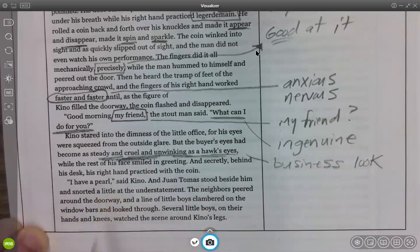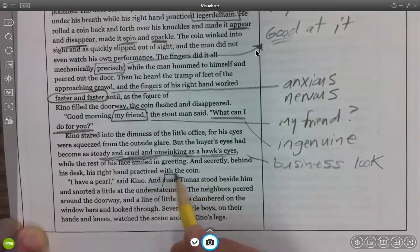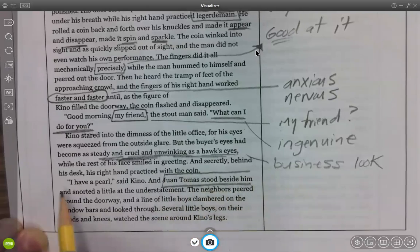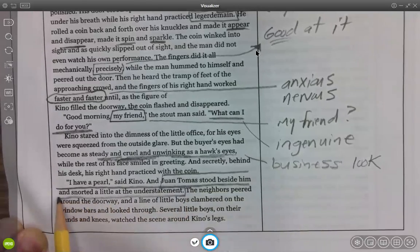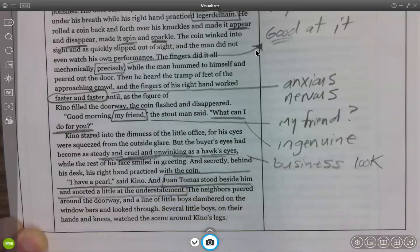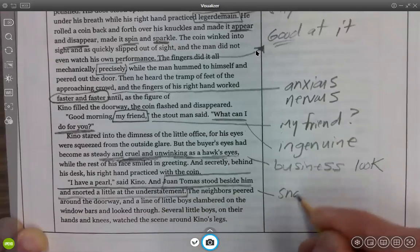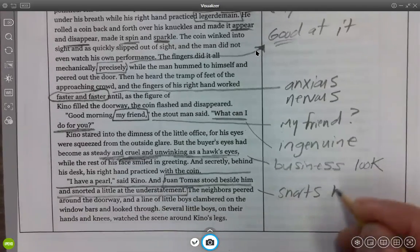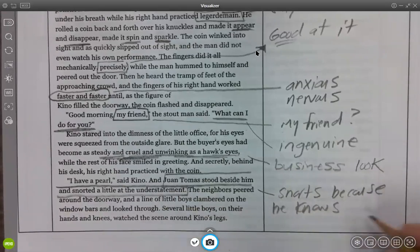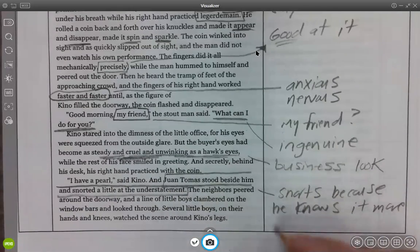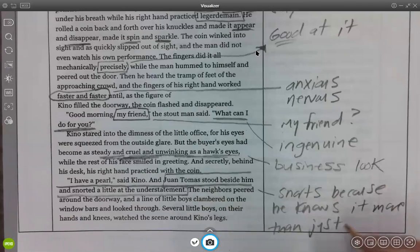I have a pearl, said Kino. And Juan Tomás stood beside him and snorted a little at the understatement. You know, I like this, that Juan Tomás, his brother, his right-hand man in this case, Kino says, I have a pearl, and Juan Tomás snorts. Like, it's not just a pearl, it's the pearl. The pearl. This is going to be a little bit longer because he knows it's more than just some ordinary pearl.